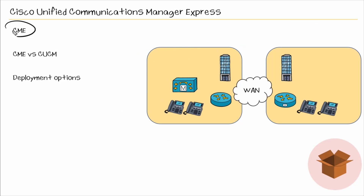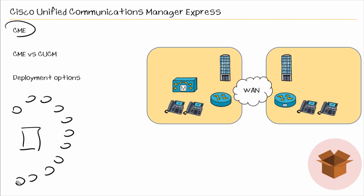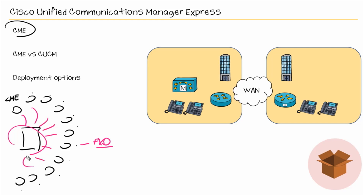Where exactly could you see Call Manager Express deployed? In one of our environments, we had our local government building but we had many fire stations throughout the county. We installed Call Manager Express on each one of those ISRs located at those fire stations, giving them local call processing, and each ISR had connectivity to the PSTN via FXO ports. The beauty of this is that it had no dependency on the main site — in the event it lost connectivity to the main site, they still had local processing, so the phones would remain registered and they had connectivity out to the PSTN via the FXO ports.